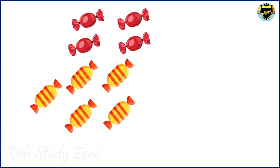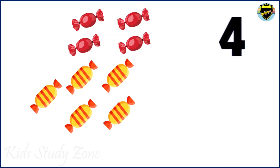As you can see there are some candies. Some candies are in red color and some candies are in yellow color. So let us start counting the red candies: 1, 2, 3, 4. So we will write 4. We have 4 red candies. Children, you can also repeat it after me. We have 4 red candies.